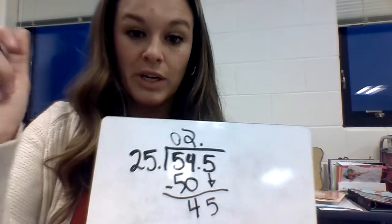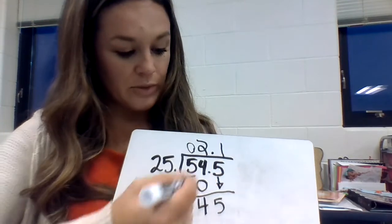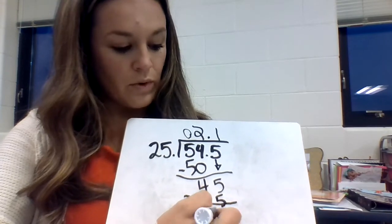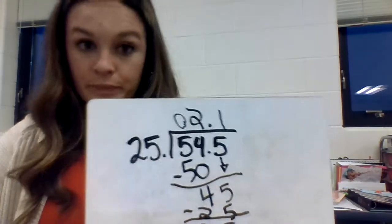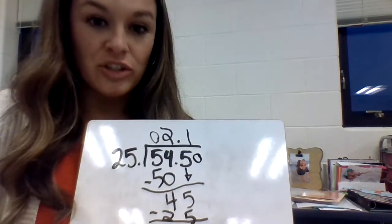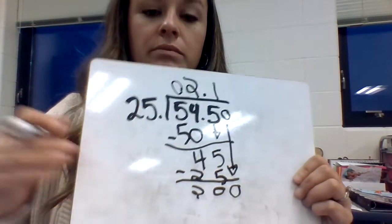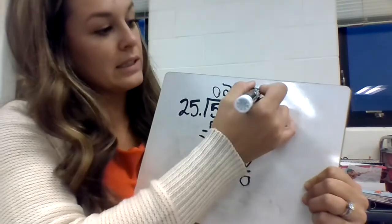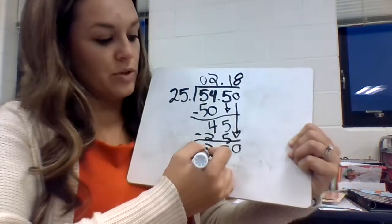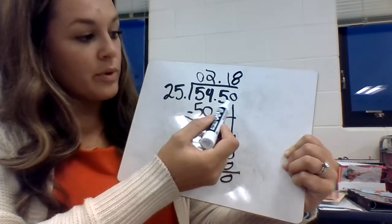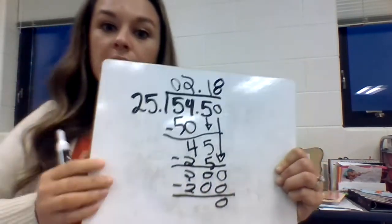How many times does 25 go into 45? 25, 50. Well, 50 is too much, so it only goes into it once. 25 times 1 is 25. We've still got 20 left over, but no numbers. Do you all remember what we needed to do? We have to add a 0 because that does not change the value and bring it down. Now how many times does 25 go into 200? If you skip count by 25's, it's 8. 8 times 25 is 200. You're left with 0, and there are no more numbers. So 54.5 divided by 25 is 2.18.